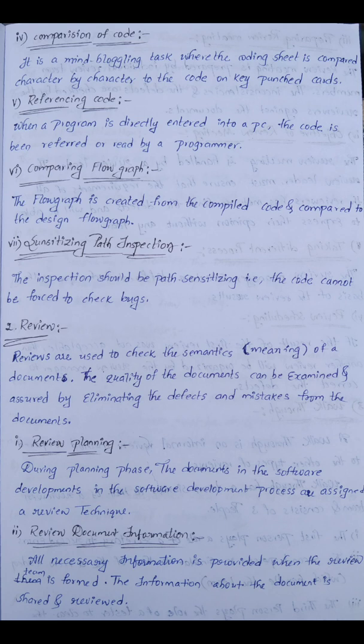Referencing code — when the program is directly entered into a PC, the code is referred to or read by the programmer one line at a time, comparing line by line. The flow graph is also compared against the code to debug any bugs.